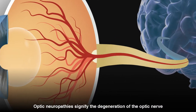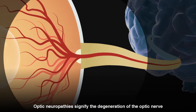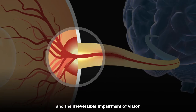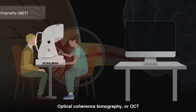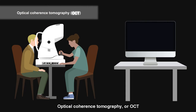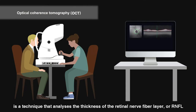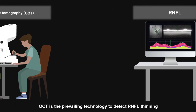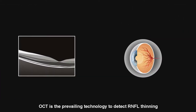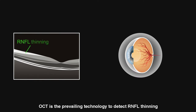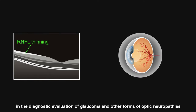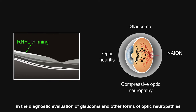Optic neuropathies signify the degeneration of the optic nerve and the irreversible impairment of vision. Optical coherence tomography, or OCT, is a technique that analyzes the thickness of the retinal nerve fiber layer, or RNFL. OCT is the prevailing technology to detect RNFL thinning in the diagnostic evaluation of glaucoma and other forms of optic neuropathies.